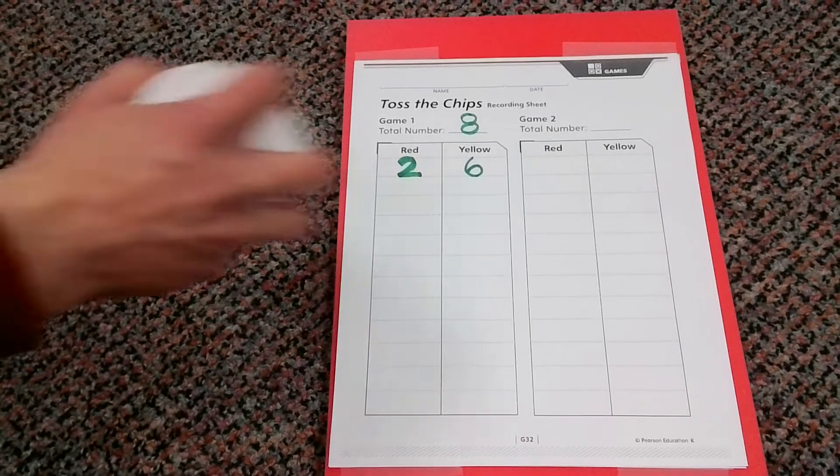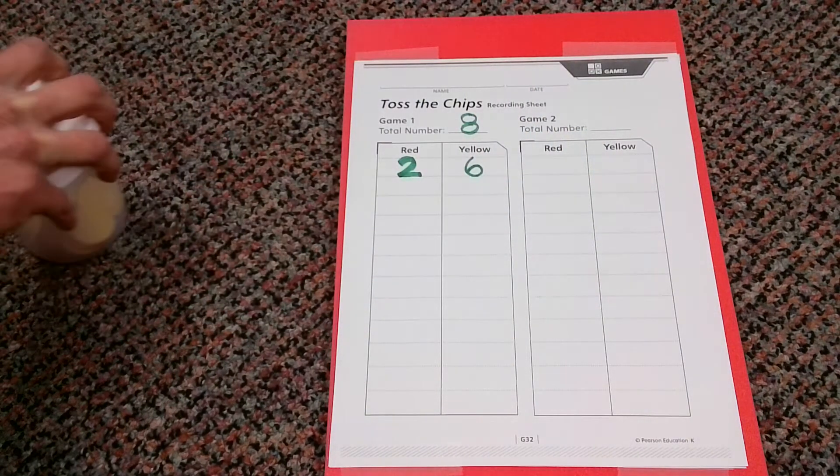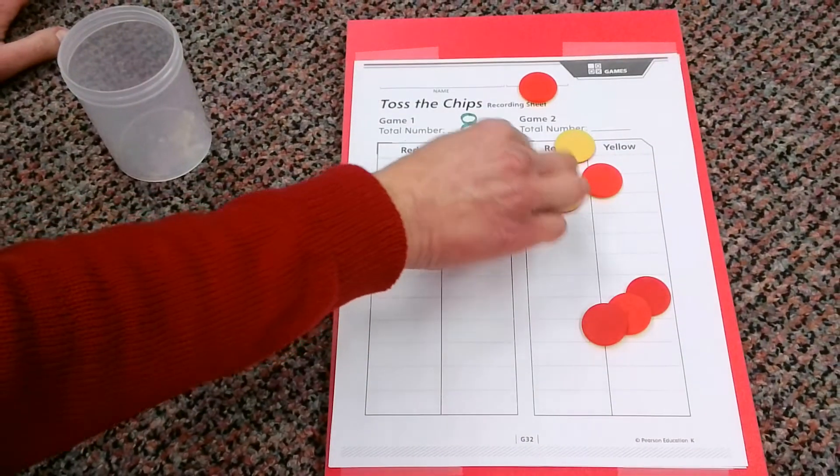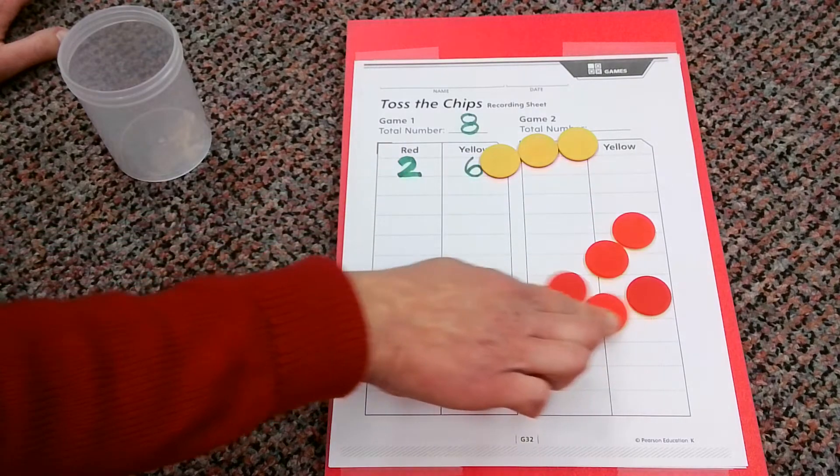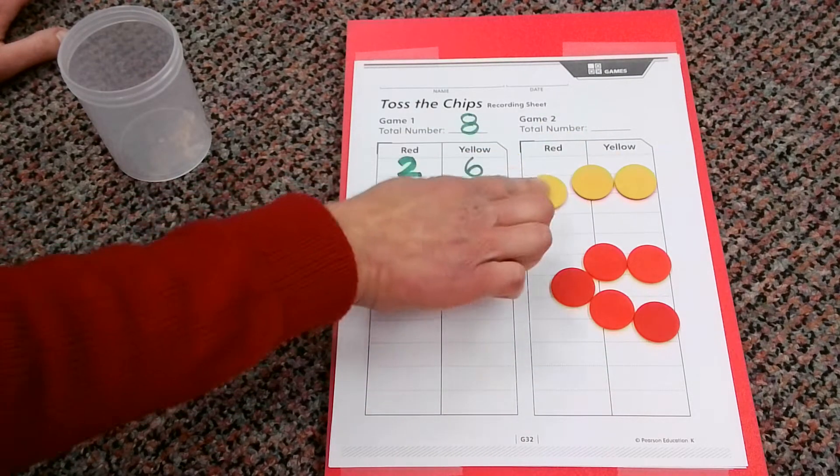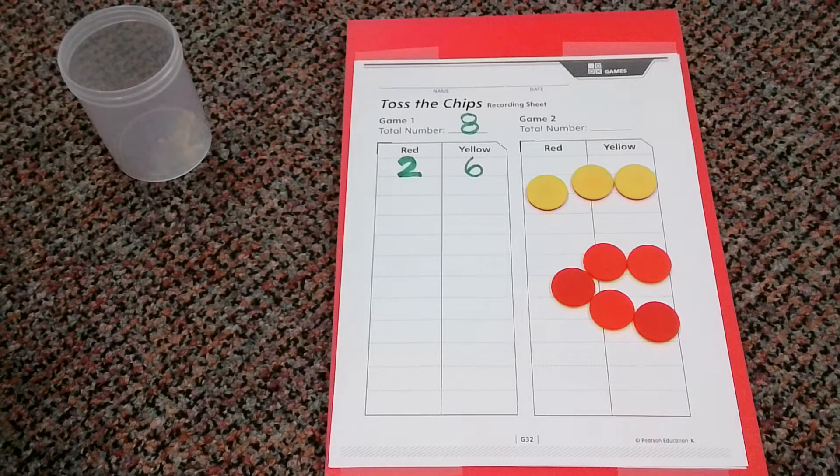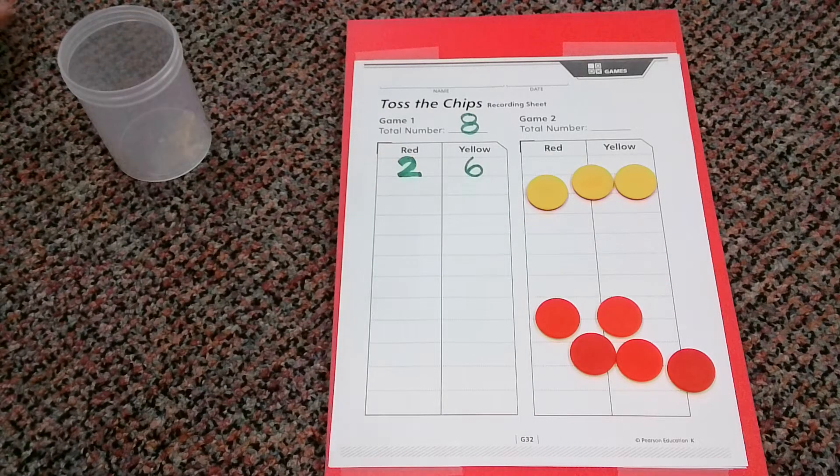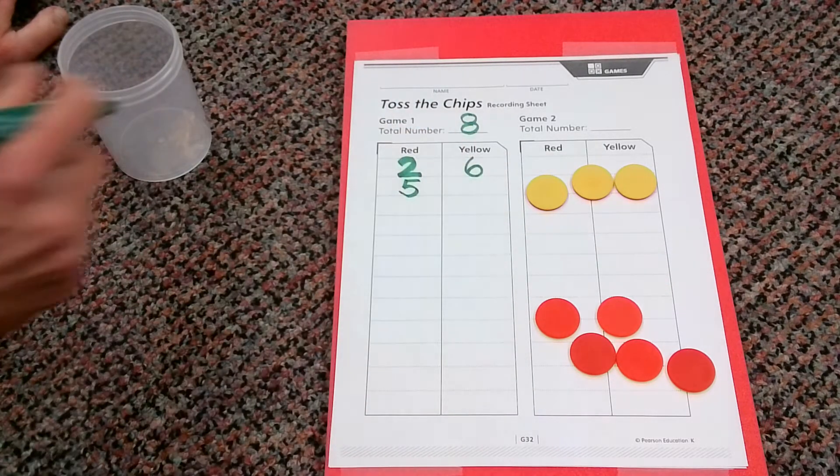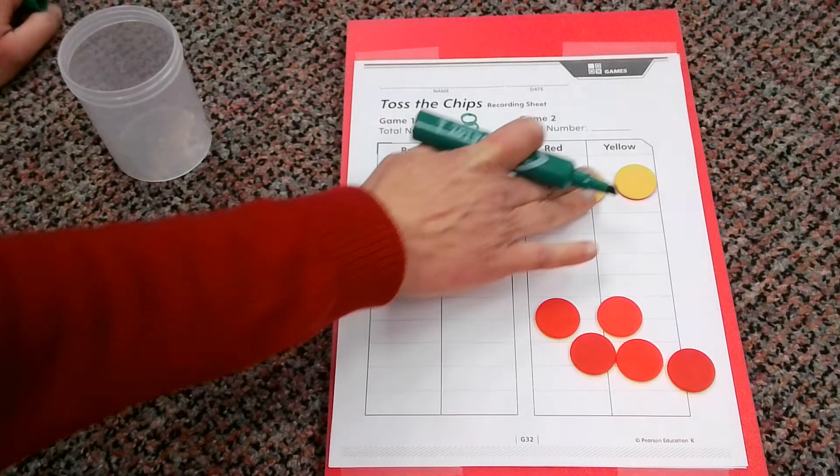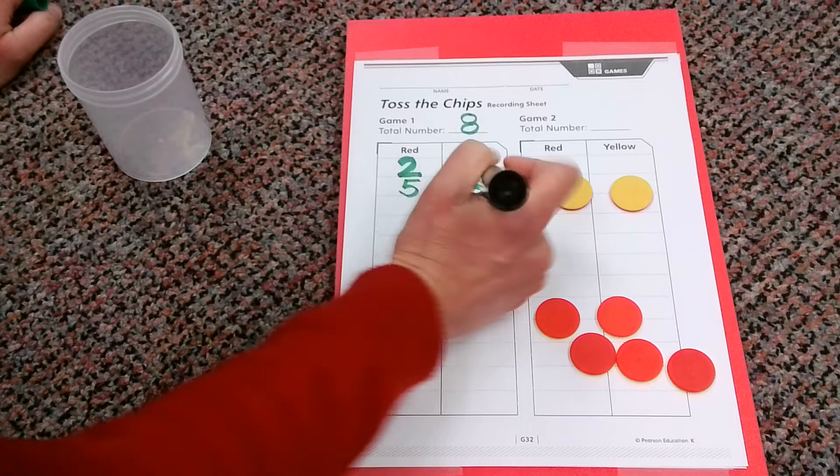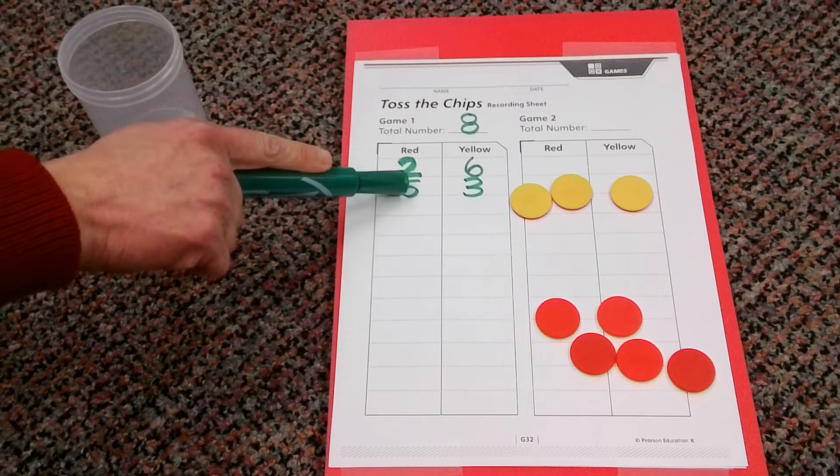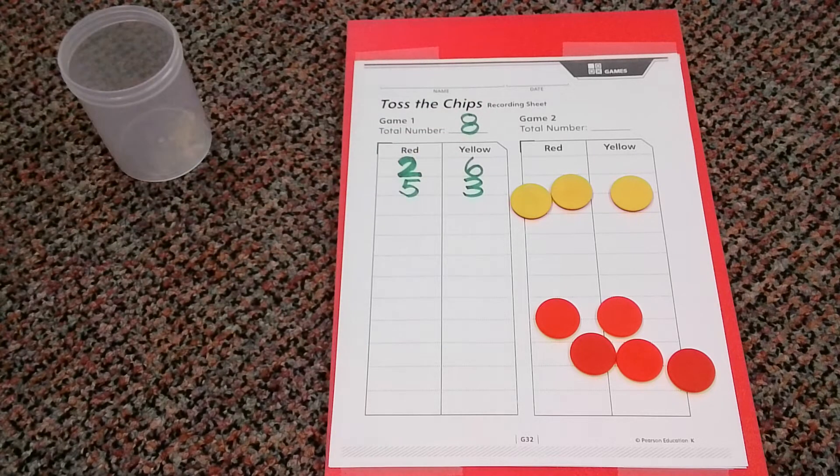Here we go. Time to shake it up. Let's see what kind of a different arrangement we could get this time. So let's go ahead, let's count our red first. One, two, three, four, five. Let's count our yellow. One, two, three. So this combination would be five plus three equals eight.